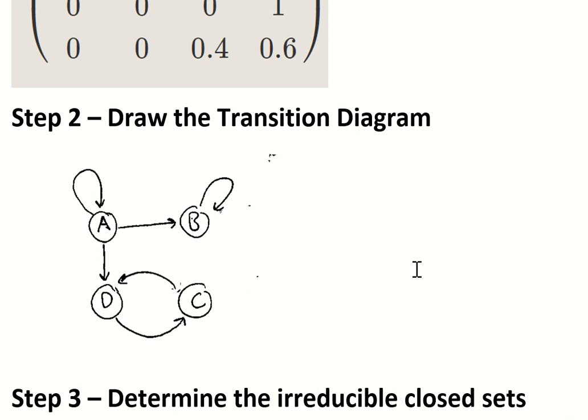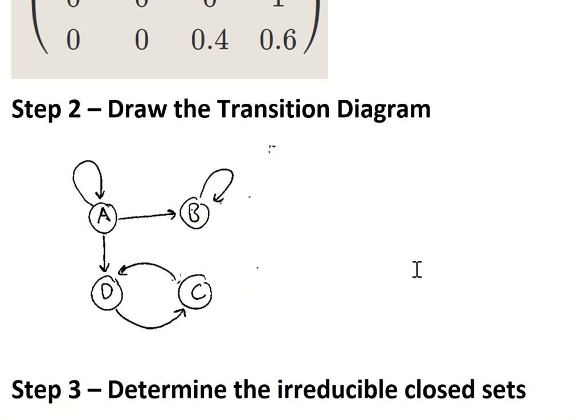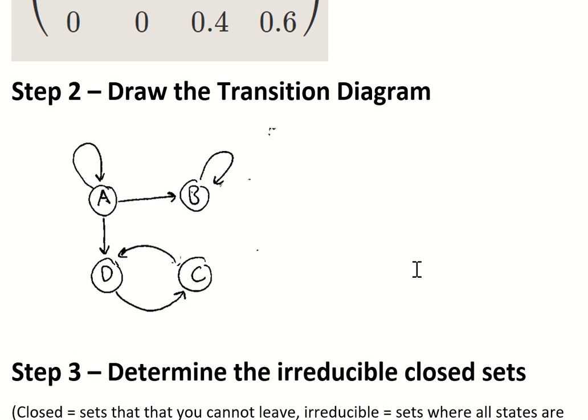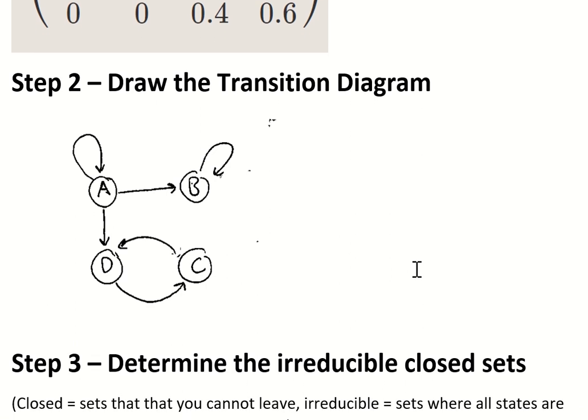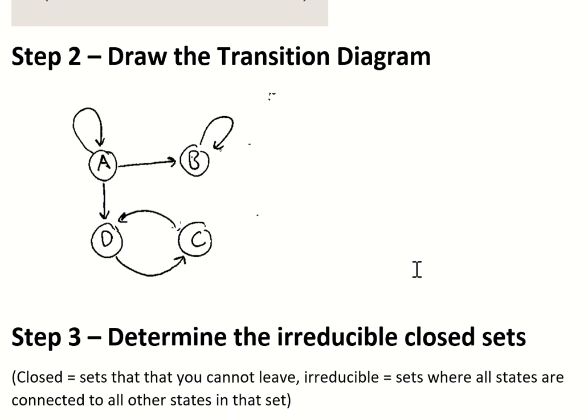Once you have drawn the transition diagram, you can determine the irreducible and closed sets. Basically, the closed sets are the sets that you cannot leave once you've gotten into them.